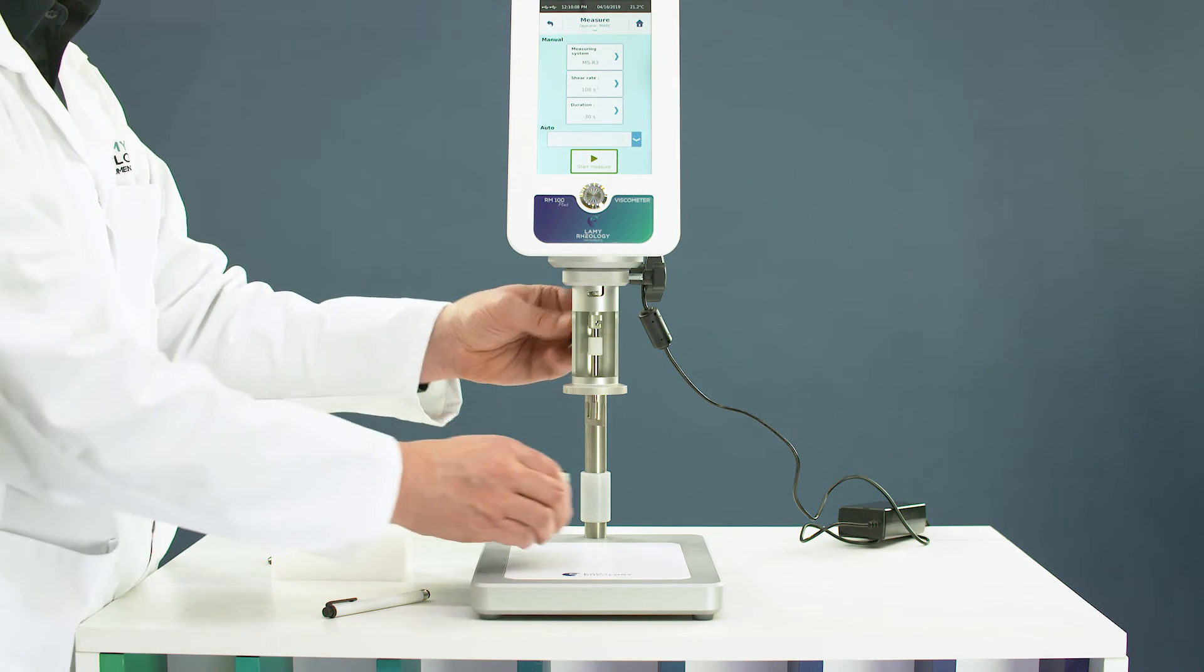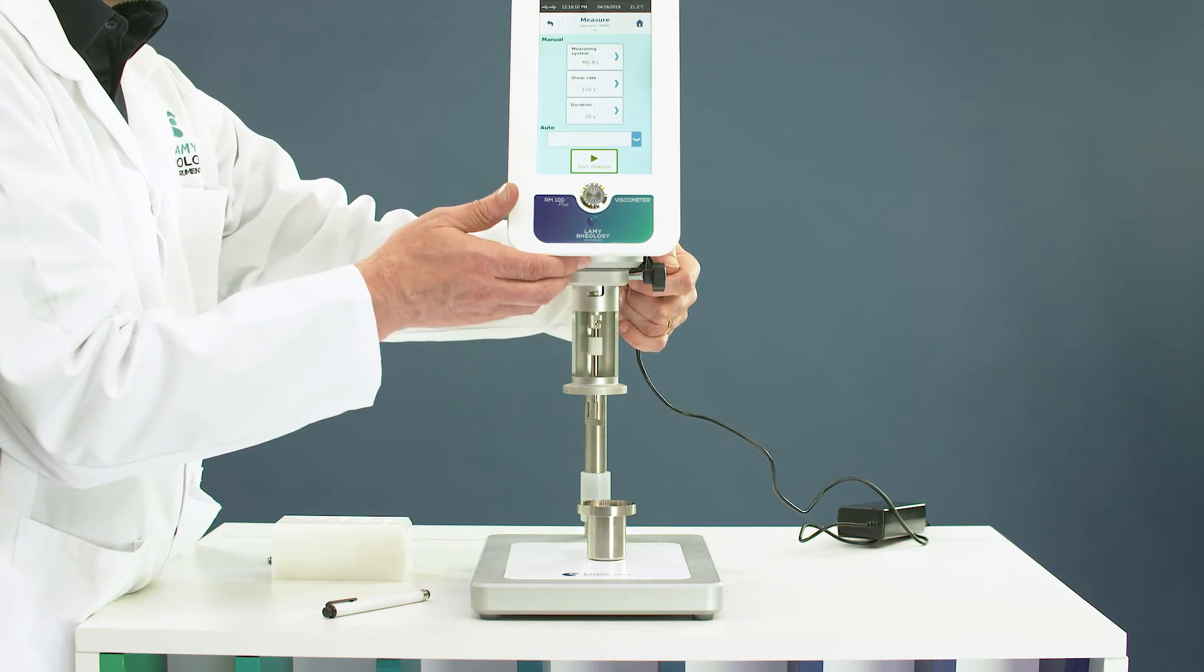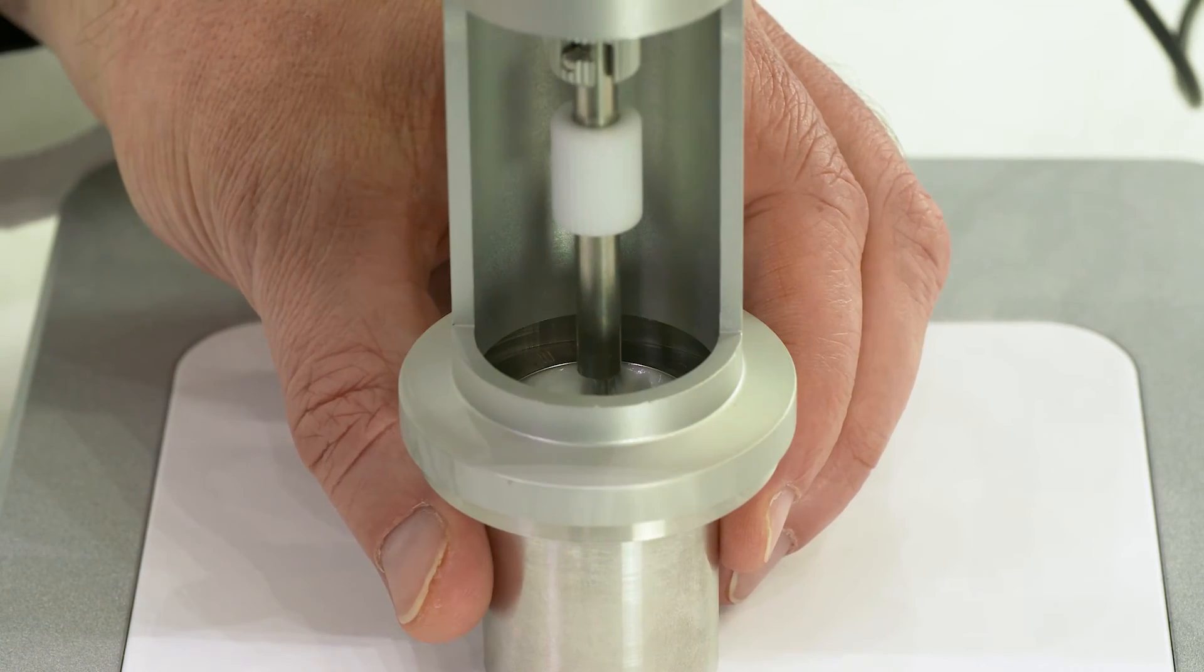Take the MB3 cup with the sample inside and place it below the device. The centering tool allows good positioning of the cup.